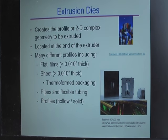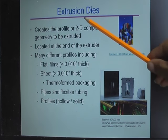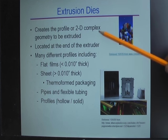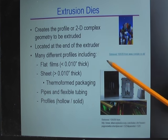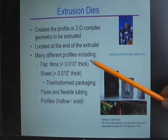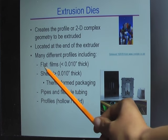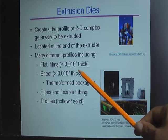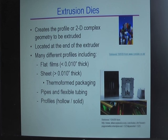There's a company that makes extrusion dies and you can make all sorts of products depending on the die you design. For example, you can make flat films — generally thinner than 0.01 inch — or sheets, which are thicker than 0.01 inch. You can also make pipes, and you can make profiles with hollow or solid objects, depending on the die you design.